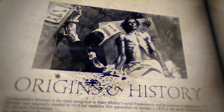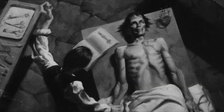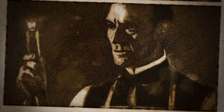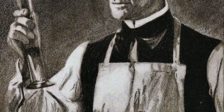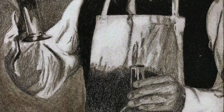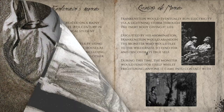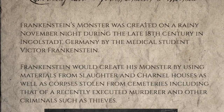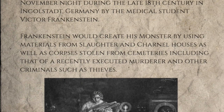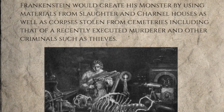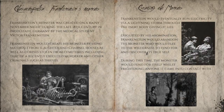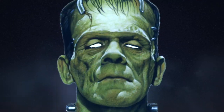Frankenstein's monster was created on a rainy November night during the late 18th century in Ingolstadt, Germany, by the medical student Victor Frankenstein. Frankenstein created his monster using materials from slaughterhouses and charnel houses, as well as corpses stolen from cemeteries, including that of a recently executed murderer and other criminals such as thieves. He eventually ran electricity via a lightning storm through the inert body, giving it life.